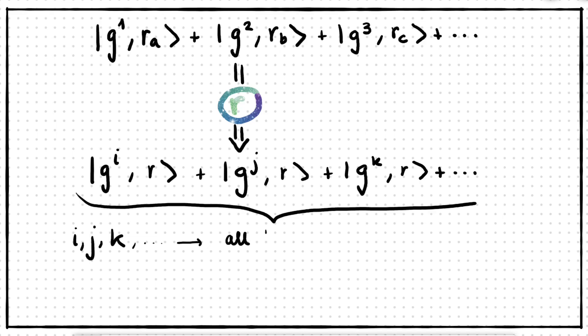Looking back at the mathematical property we presented, we realized something very important. Those powers are all numbers that are p apart from each other. Therefore, p is the period we see in the superposition of our output.